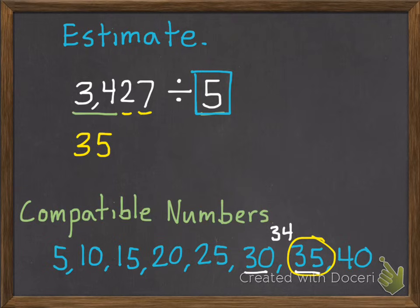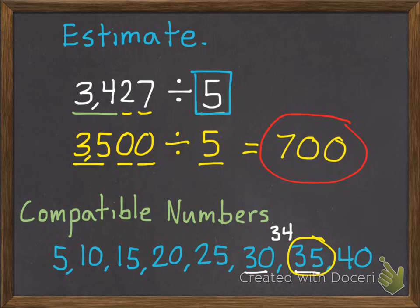And we have two more spots in our place value we need to fill. So just like with rounding, everything after what we change becomes a zero. So 3500 divided by 5. Now this is something we can compute mentally easily. So 35 divided by 5 is 7 with two zeros.